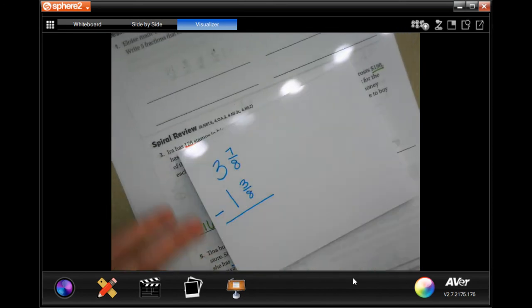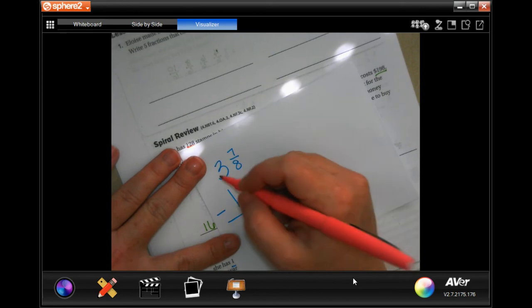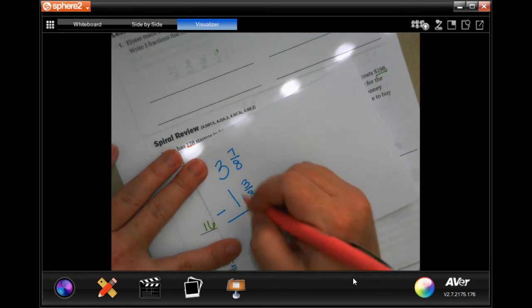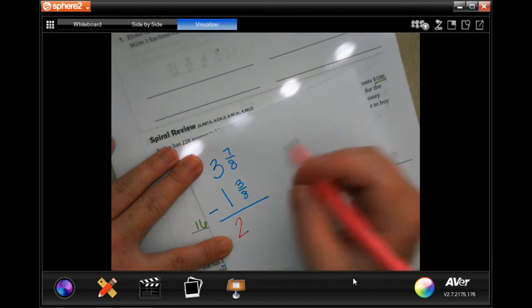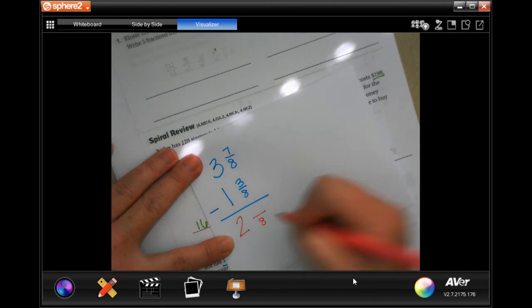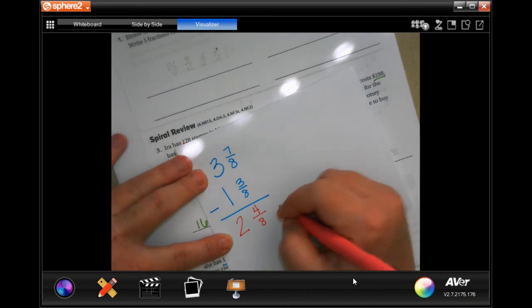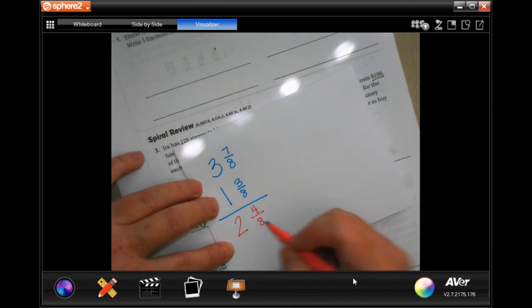All right, well let's see. Three minus one is two. Okay, we're going to keep our denominator, and seven minus three is four. Now the only difference there is that four over eight can be reduced.